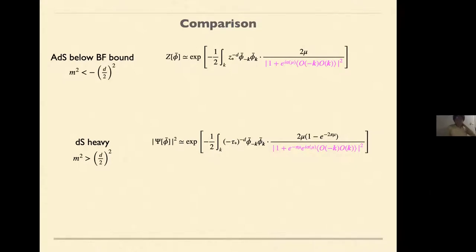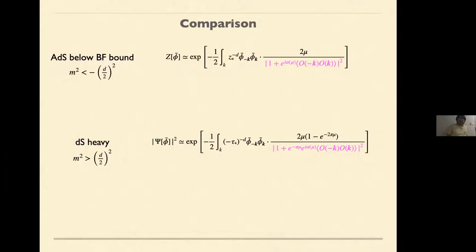I have some additional comment not in the movie. After uploading the movie, we found that this coefficient — 1 over 1 plus the two-point function squared — may be interpreted as a two-point function of a non-conformal field theory obtained as a double-trace deformation of a conformal field theory. We are summarizing this result now and I hope it will appear in one or two weeks. This is an additional comment on my own talk.